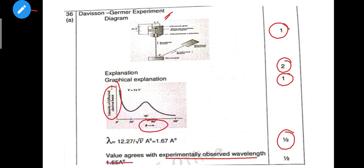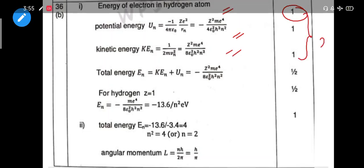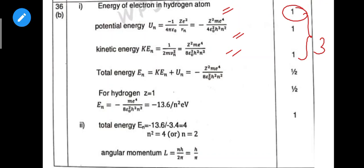Next, graphical representation — the value agrees, so that is 1 mark, making 5 marks total. Next, energy of the hydrogen atom — kinetic energy and potential energy: two equations is 1 mark, making 3 marks. Then total energy — add them to get the final equation.